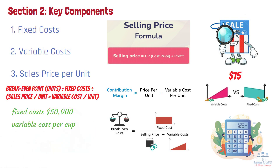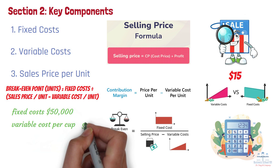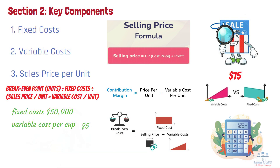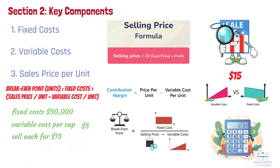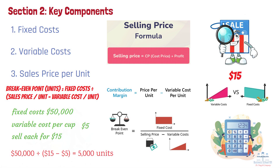including materials and packaging, is $5, and they plan to sell each cup for $15, the break-even calculation gives 5,000 units. This means EcoCup needs to sell 5,000 reusable cups to cover all its costs. Any sales beyond 5,000 units will generate a profit.